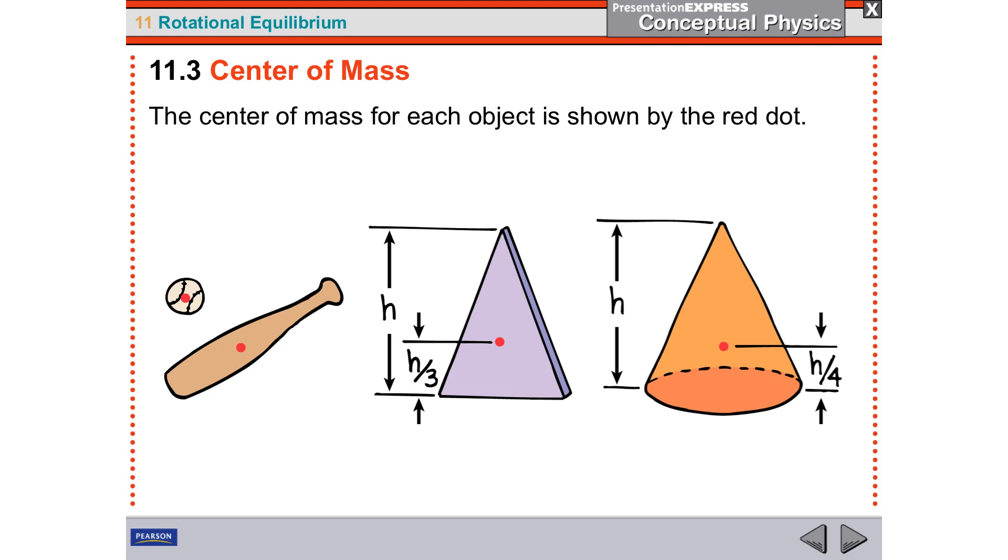So you can see a few of the formulas. For a triangle, it's going to be a third of the way up if it's isosceles. For a cone, which is an isosceles triangle three-dimensional, it happens to be at a fourth of the way up. And that can all be derived mathematically.